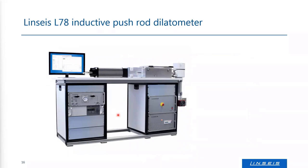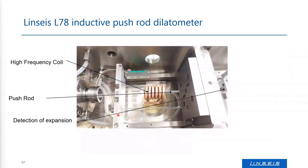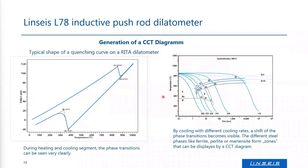We also have special inductive pushrod dilatometers in our product range. The heating is done with a copper coil, illustrated in the photograph, which heats the sample inductively around the pushrod and sample. This can be done for metals, steel, and other alloys. The purpose is to heat up very quickly and also cool down quickly, at rates of hundreds or even thousands of Kelvin per second, to generate phase diagrams and CCT diagrams for steels and other metals.